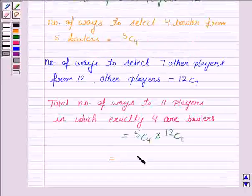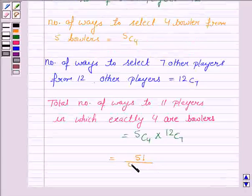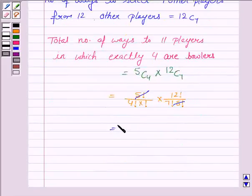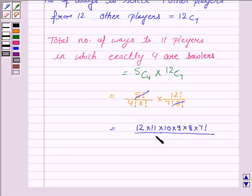Now, this is equal to 5 factorial upon 4 factorial into 1 factorial, into 12 factorial upon 7 factorial into 5 factorial. 5 factorial gets cancelled with 5 factorial, and we have 12 factorial, which can be written as 12 into 11 into 10 into 9 into 8 into 7 factorial upon 7 factorial into 4 factorial. And 4 factorial can be written as 4 into 3 into 2 into 1.